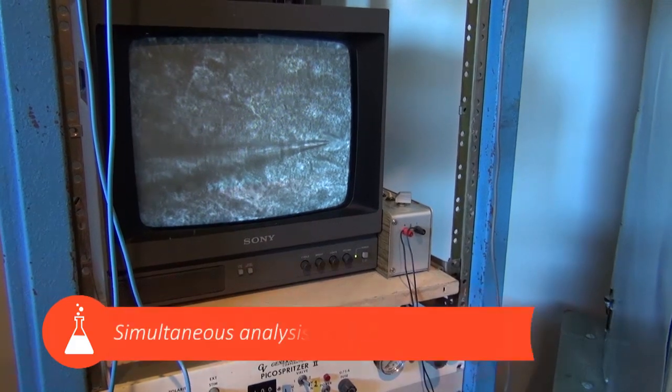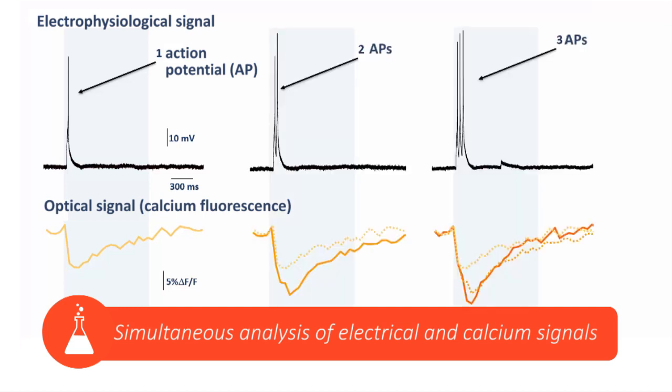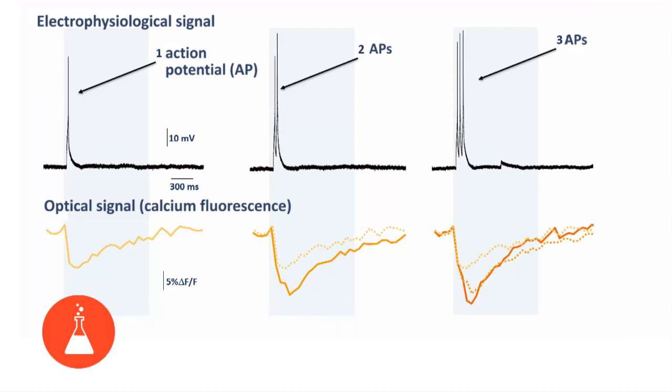We are able to record the electrical activity of a neuron alongside its calcium firing. When a neuron generates an action potential, we record a variation in the fluorescence. Calcium signal amplitude and duration are proportional to the number of action potentials generated by the neuron being recorded.